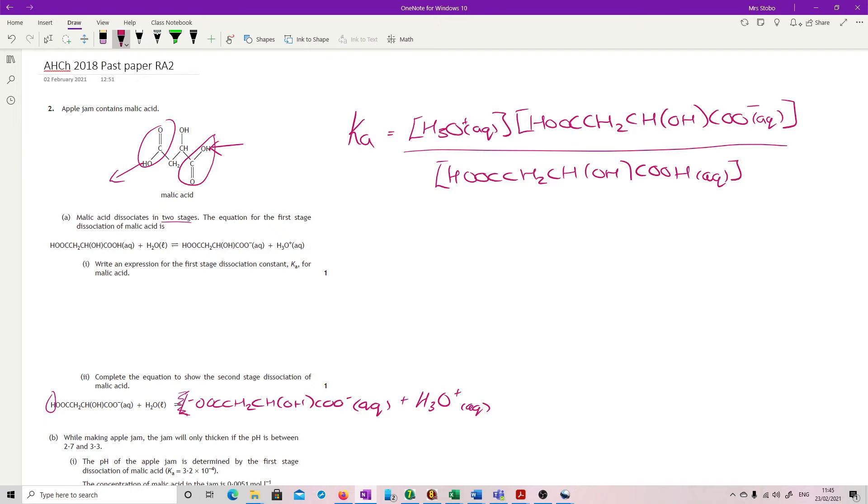I did check the mark scheme for this one and they would accept you writing it as the whole thing and putting it as two minus overall. But I think it makes more sense to have your negatives on either side.